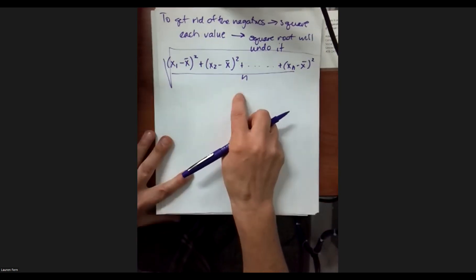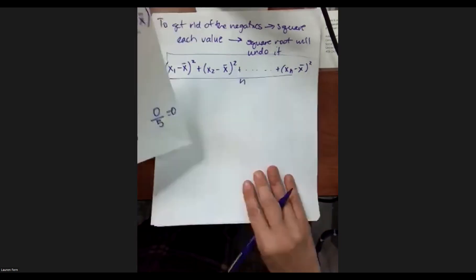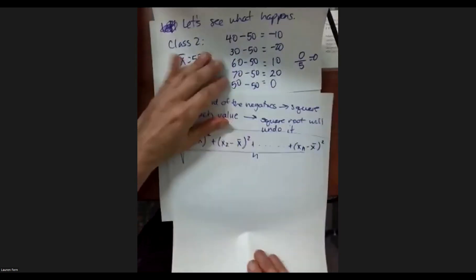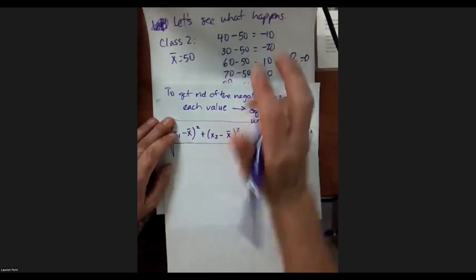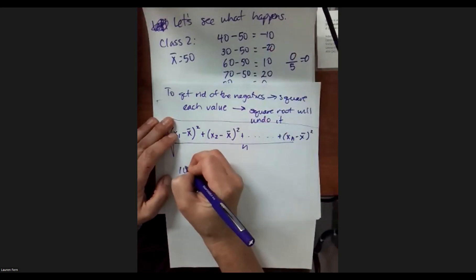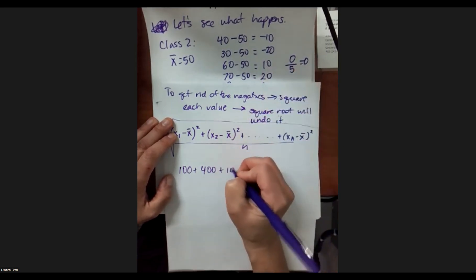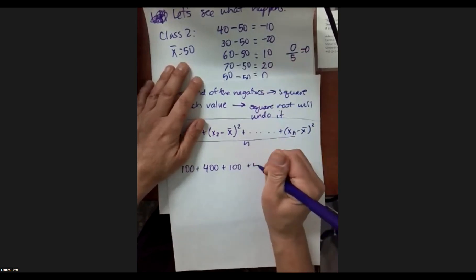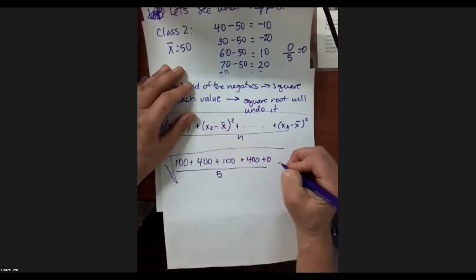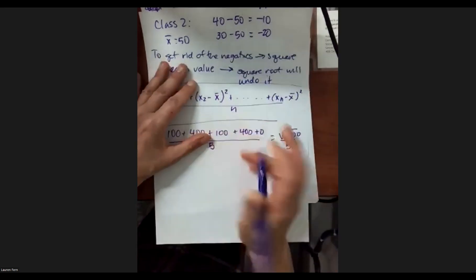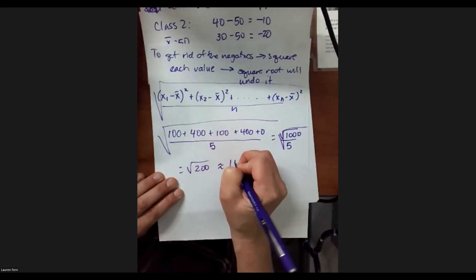This looks pretty funky — it's a decent-sized formula. Going back to that data set: (−10)²=100, (−20)²=400, 10²=100, 20²=400, 0²=0. We get the square root of 1000 divided by 5, which is the square root of 200, which is about 14.14.